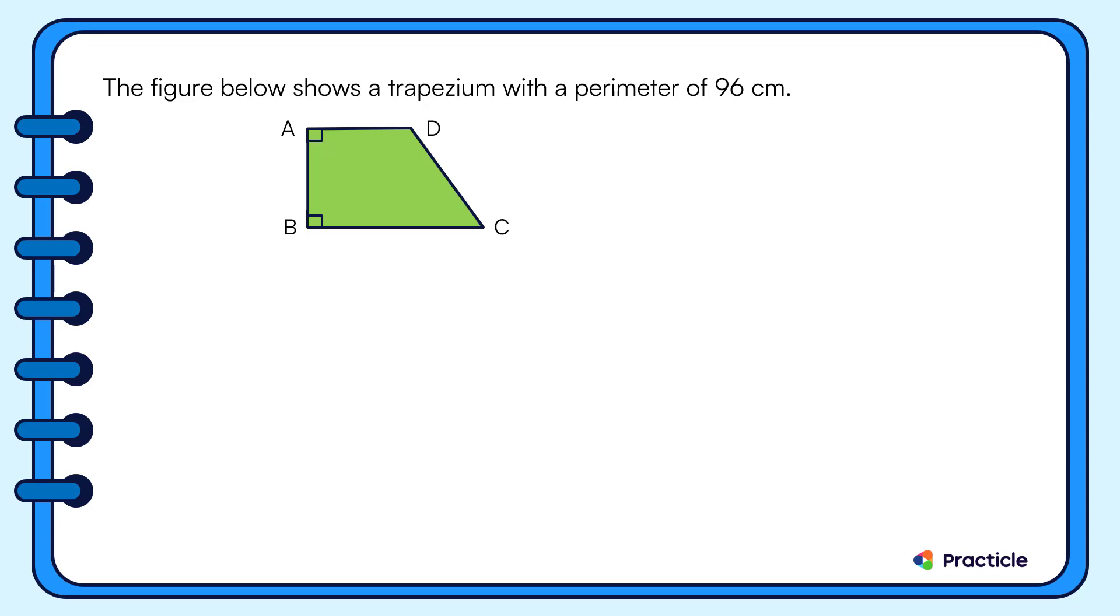Now whenever we need to solve area and perimeter questions, it's always a good habit to outline the perimeter so that we can see things more clearly. We have this, this, this and this. Great!